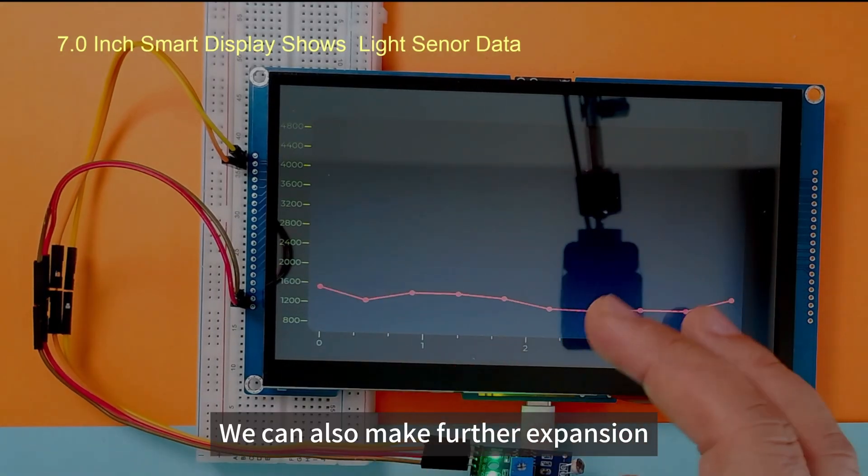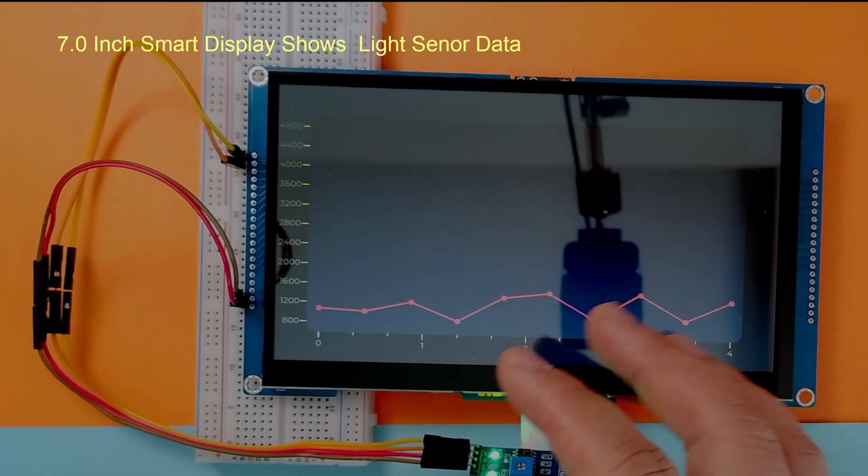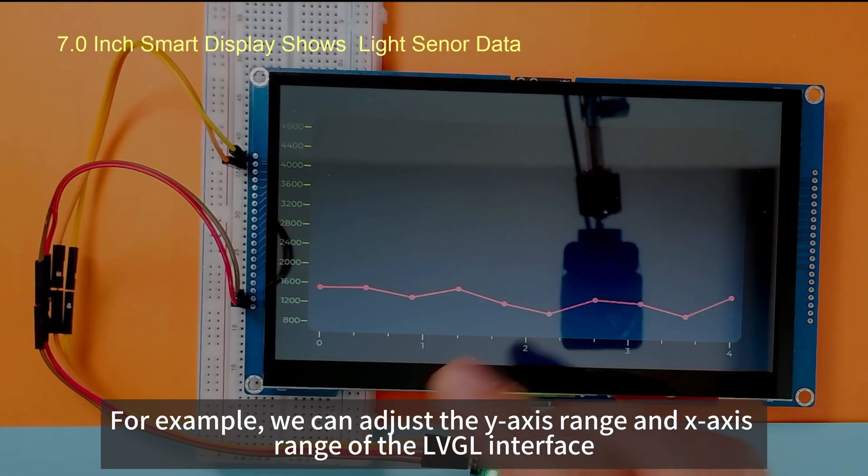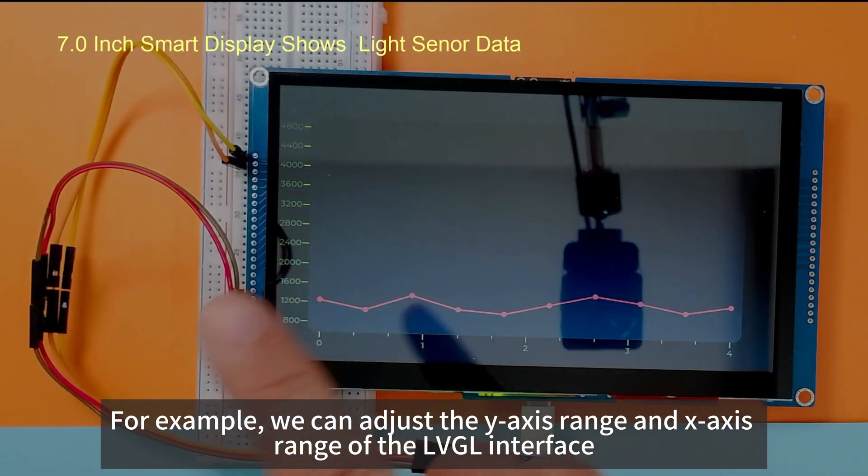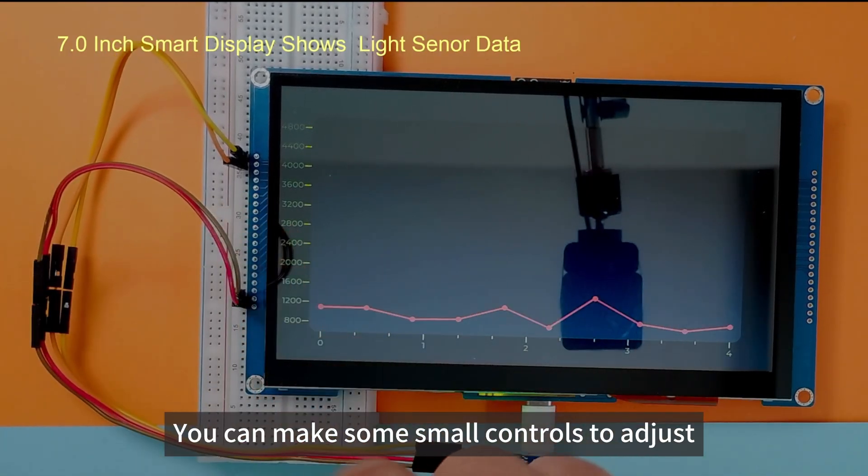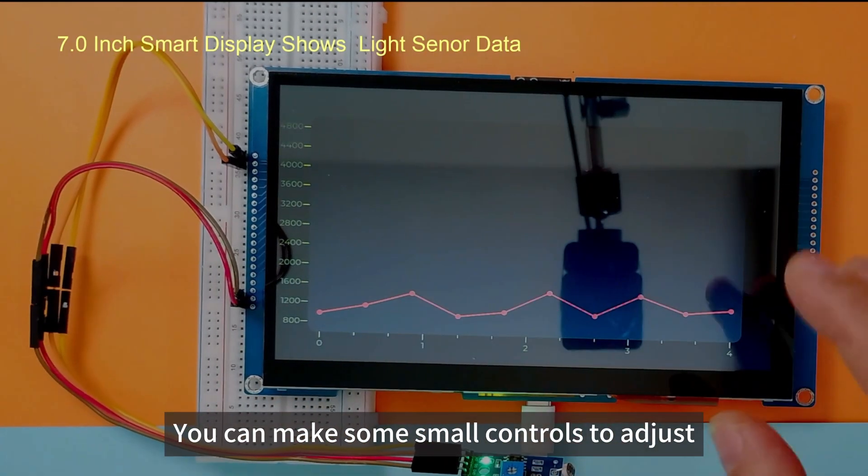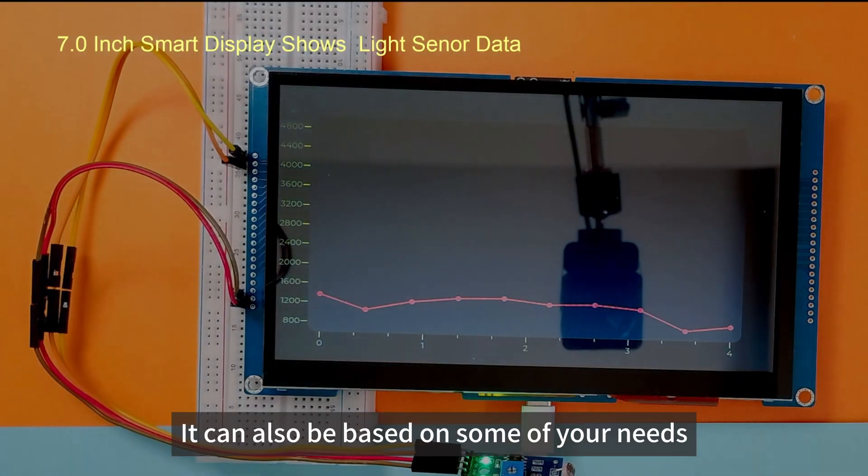We can also make further expansion. For example, we can adjust the Y-axis range and X-axis range of the LVGL interface. You can make some small controls to adjust. It can also be based on some of your needs.